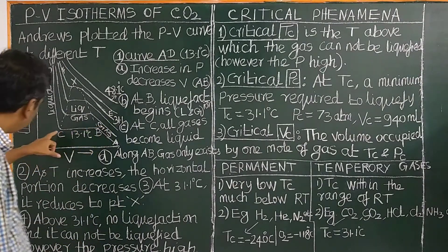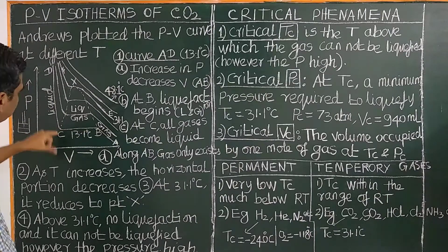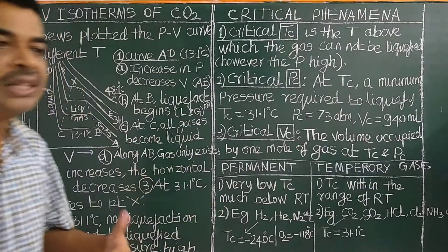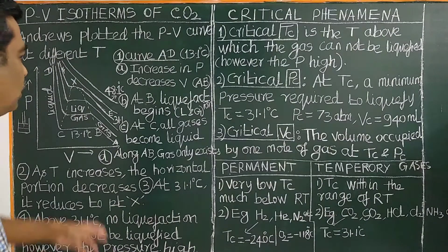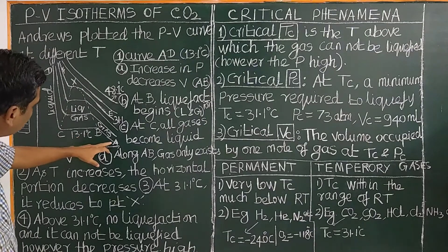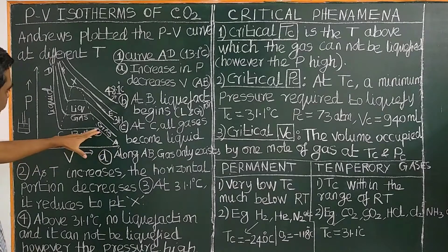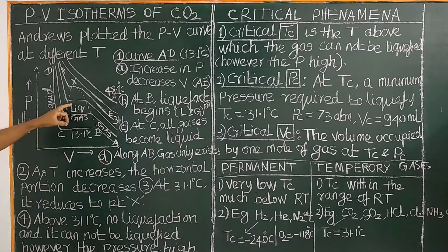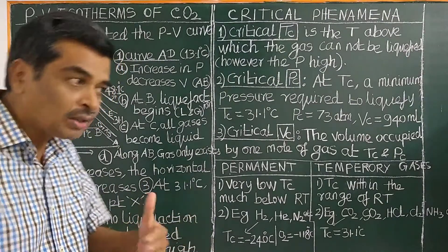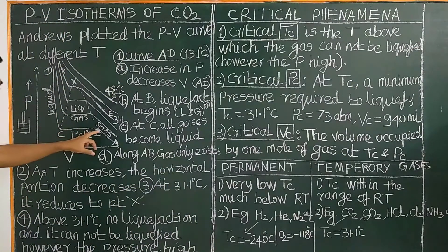From B to C, liquefaction continues. At point C, all the carbon dioxide gas is converted into liquid. Along curve A–B, only gas is present. Along curve B–C, both liquid and gas are present, because liquefaction has started. Along curve B–C, both the liquid and gas phases are present.